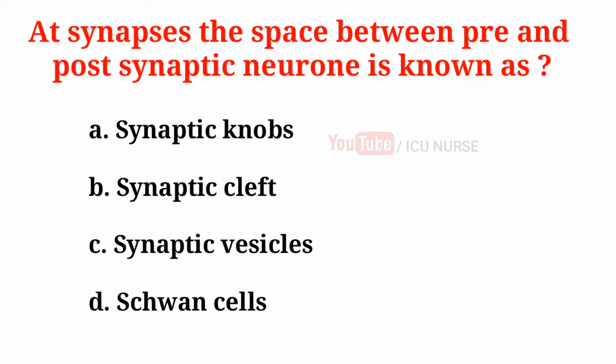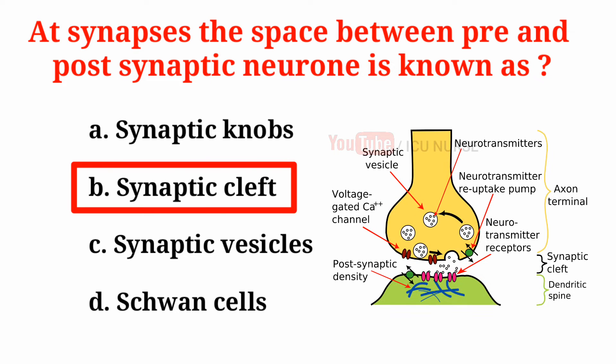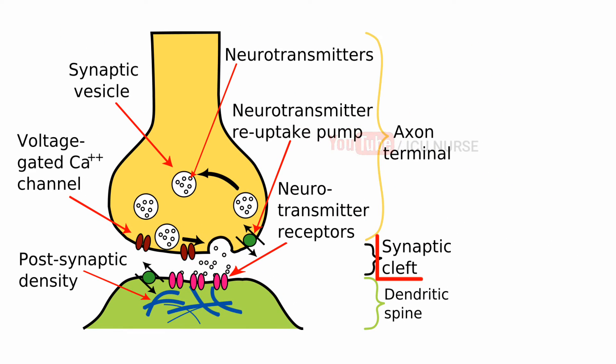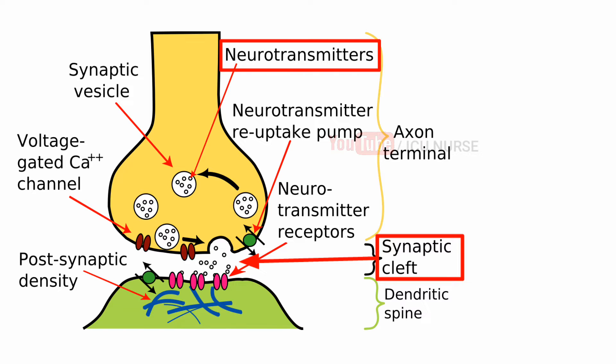At synapses, the space between pre- and post-synaptic neuron is known as: A. Synaptic knobs, B. Synaptic cleft, C. Synaptic vesicles, D. Schwann cells. The correct answer is B. Synaptic cleft. Synaptic cleft is the space between neurons at a nerve synapse across which a nerve impulse is transmitted by a neurotransmitter. Synaptic cleft is also called synaptic gap.